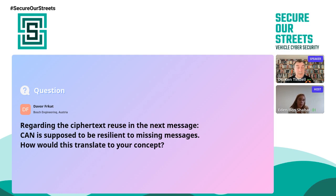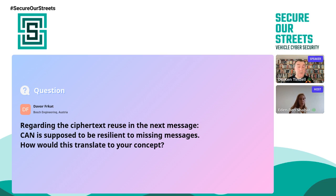Next question: since you use the previous ciphertext in the next message, and CAN is supposed to be resilient to missing messages, how would this translate to your concept? CAN's atomic broadcast protocol means when a message is marked off the sending CAN controller, every online receiver has received that frame. Missing messages at the application level typically result from improper buffering — which is a broken system. But even if you do drop messages and then come back online, the CFB cipher feedback mode lets you pick up from where you left off without needing a special restart.